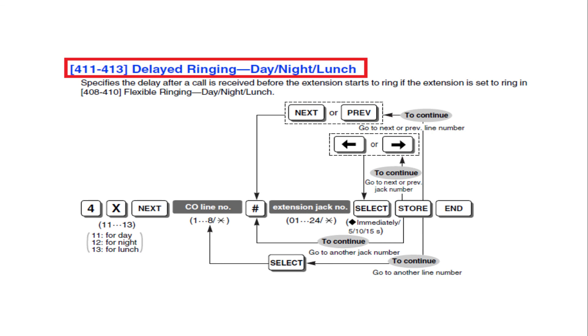Delayed ringing is nothing but you can delay the ring pattern. For example if you enable incoming call for two extensions that is 101 and 102 then you want to configure like first ring will goes to 101 then if nobody attending the call over there then after 15 seconds need to ring in 102. In this case you can go to programming mode. After press program number 411 then select the CO in which you need to delay the incoming call. In this case you can select the extension 102 then select seconds to 15 and store it. The same you can repeat for 412 and 413 to make effective in night and lunchtime.